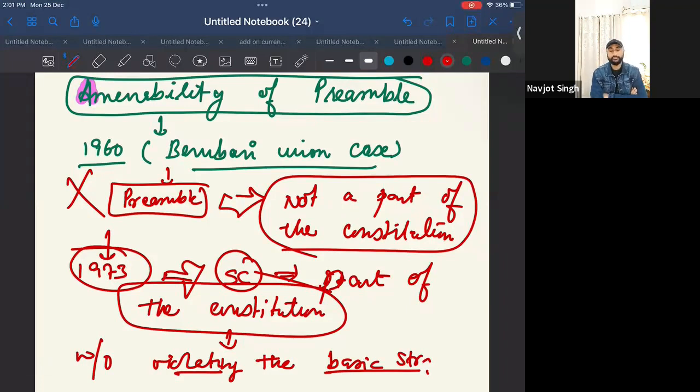And it was added after the entire constitution was ready. In the end. The preamble was added in the end. The idea being that it should reflect the essence of the constitution. It was added in the constitution after the completion of the entire constitution drafting process. Is that clear?